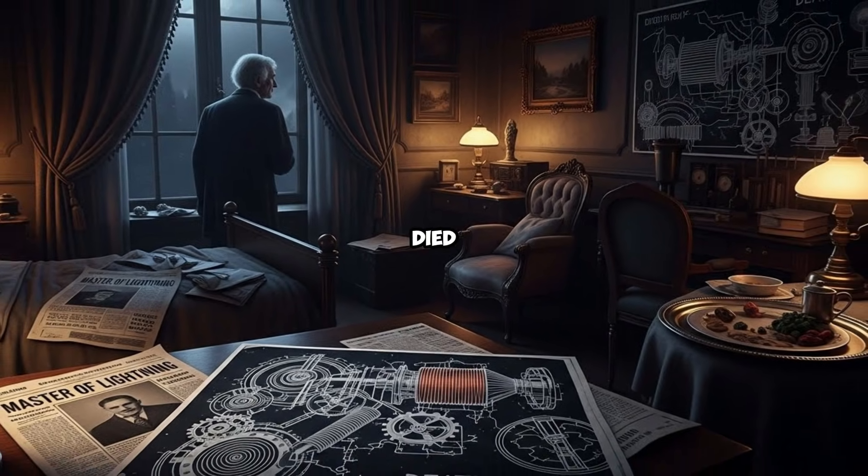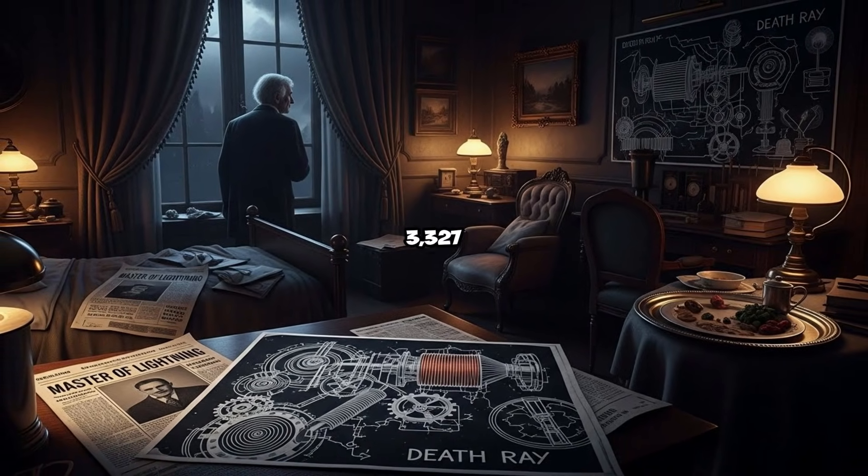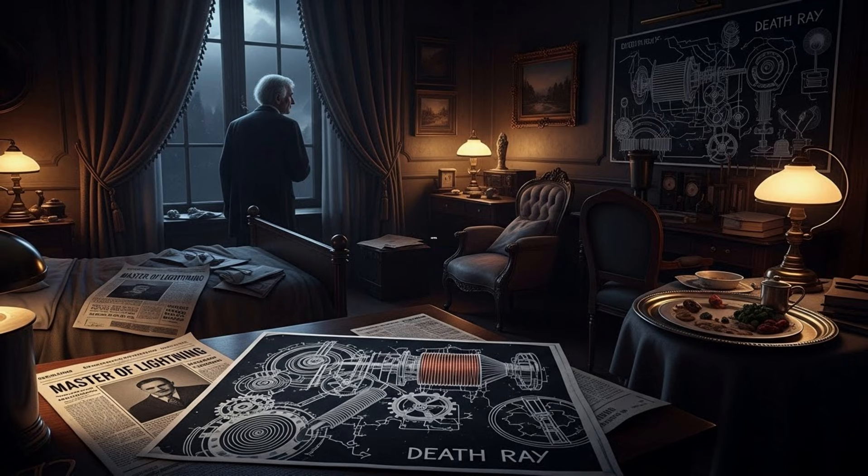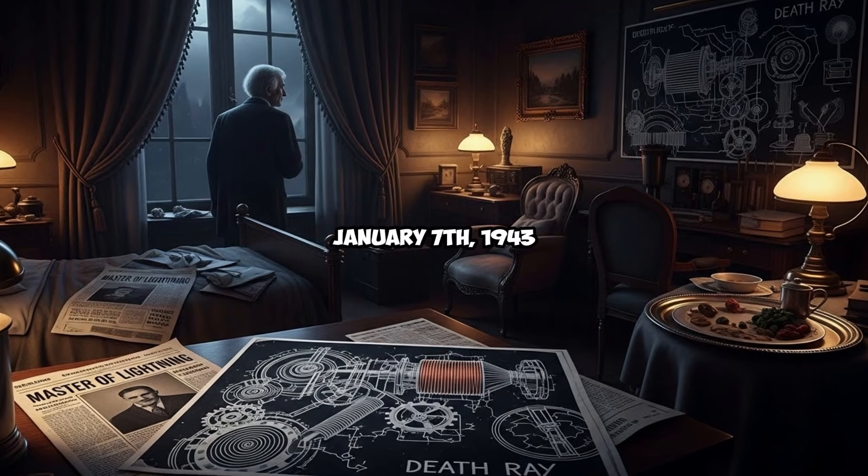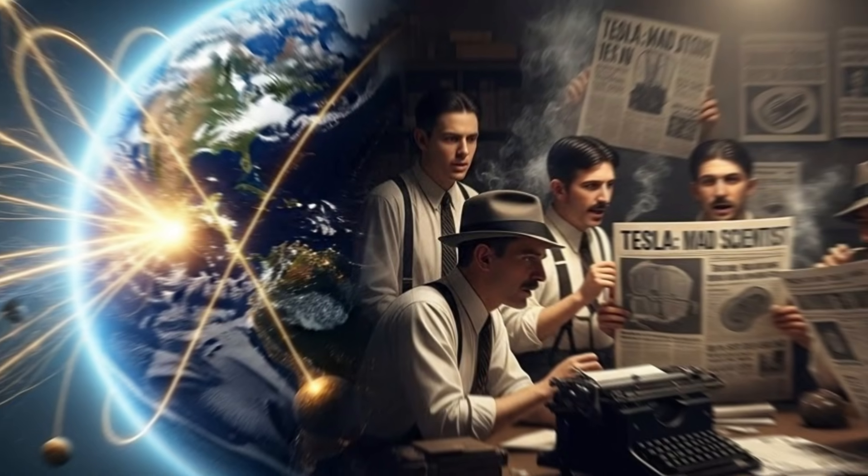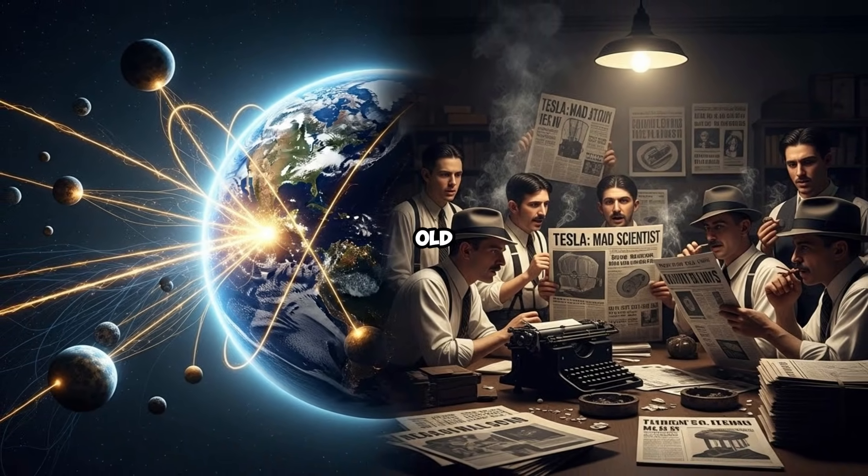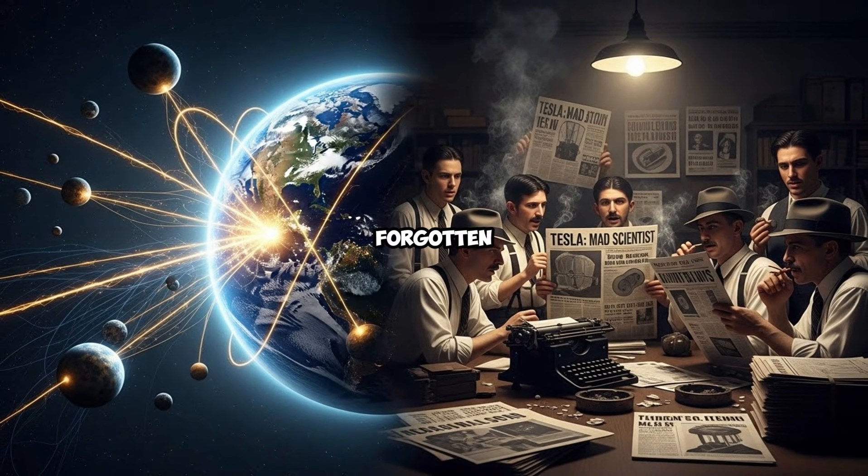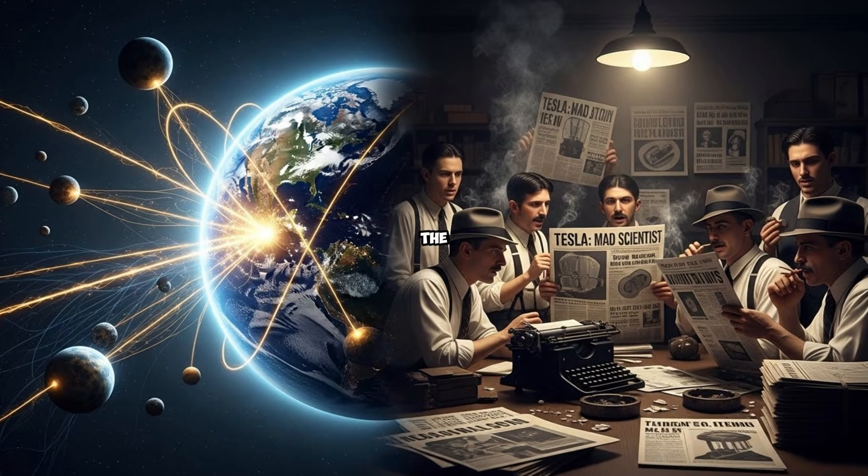Nikola Tesla died alone in room 3,327 of the New Yorker Hotel on January 7th, 1943. He was 86 years old, broke, forgotten by the public that once hailed him as the master of lightning.